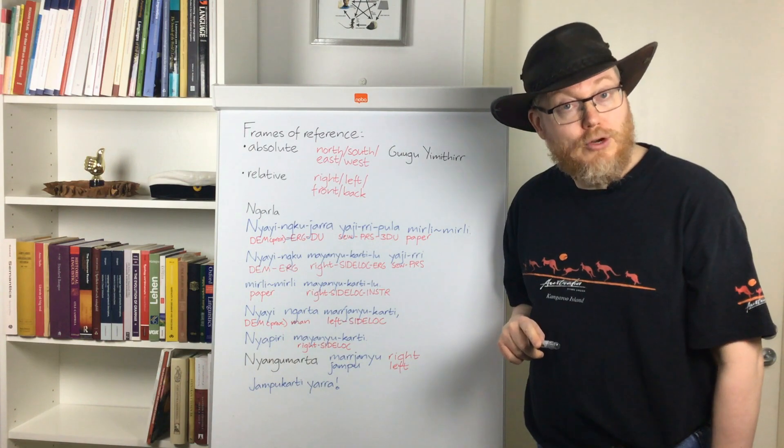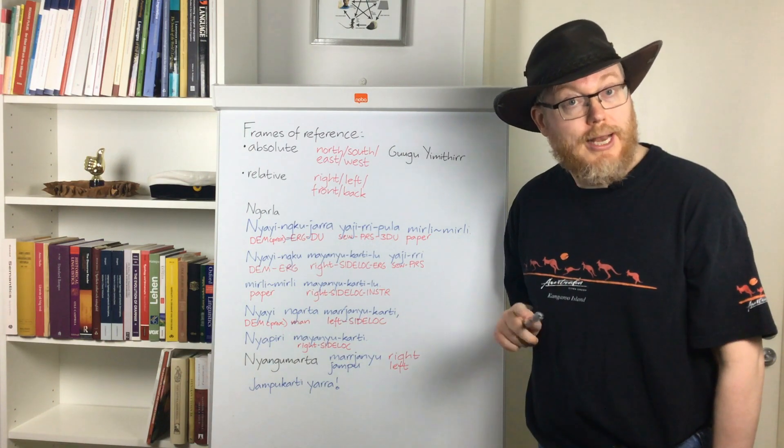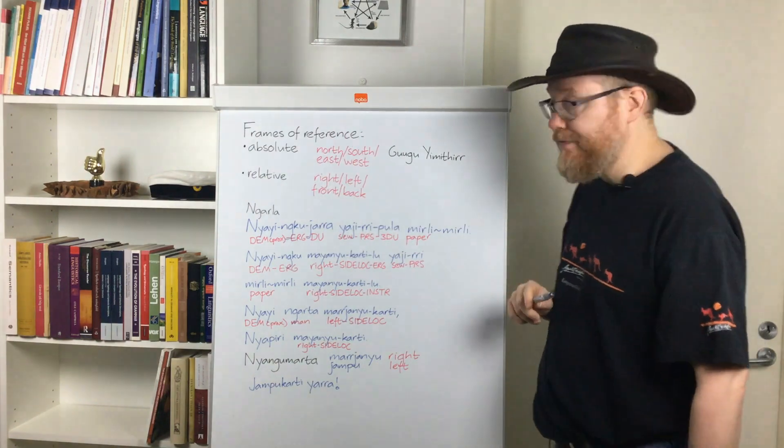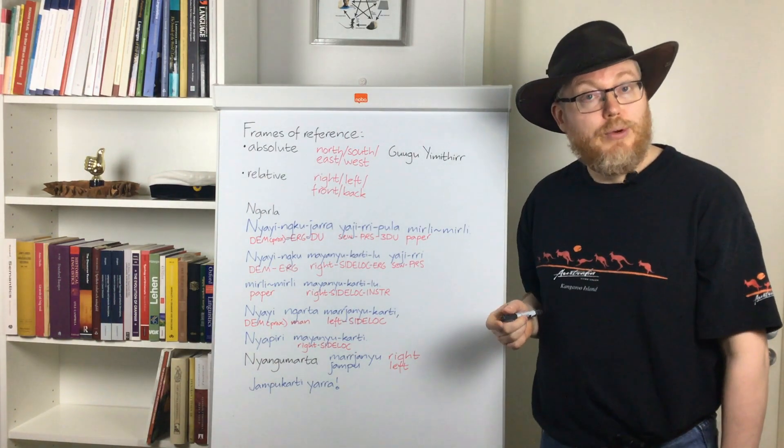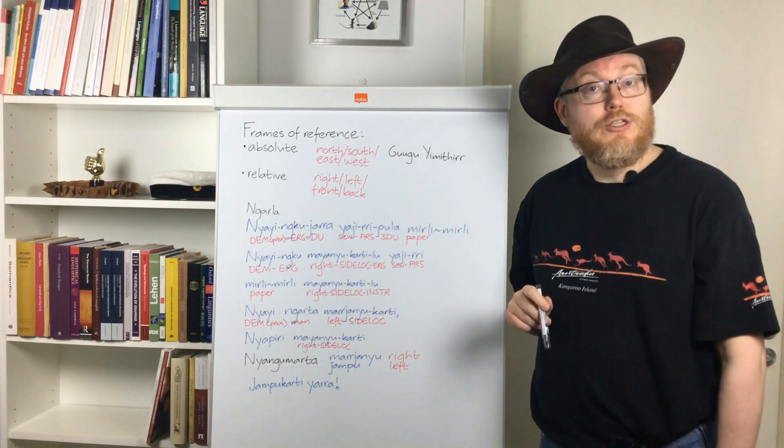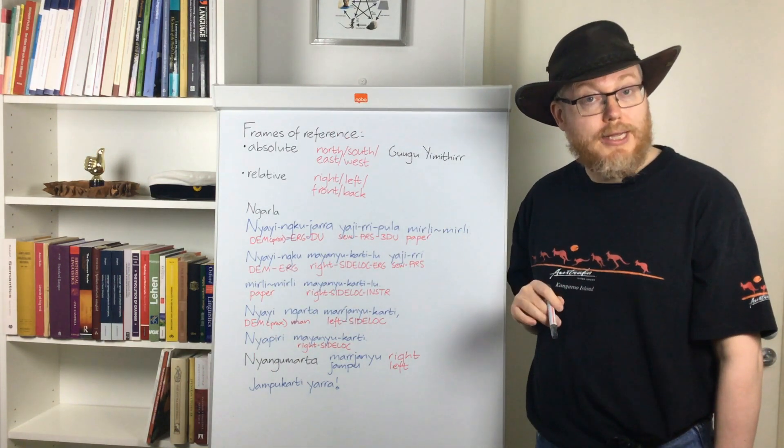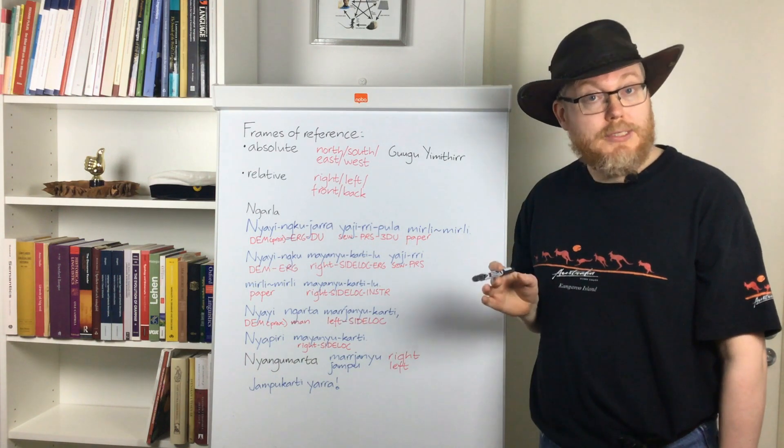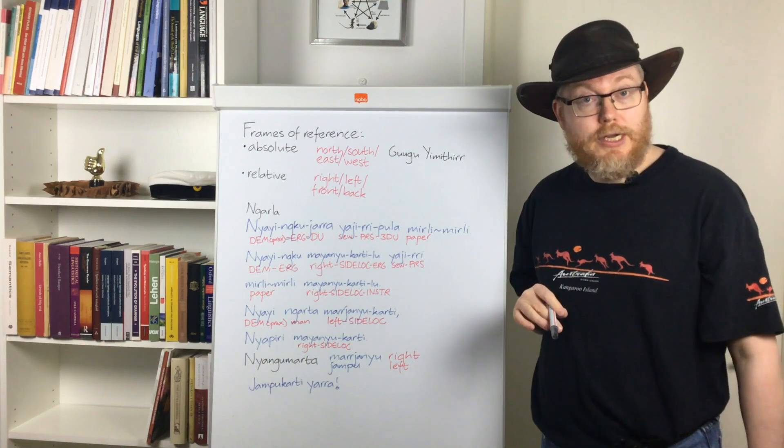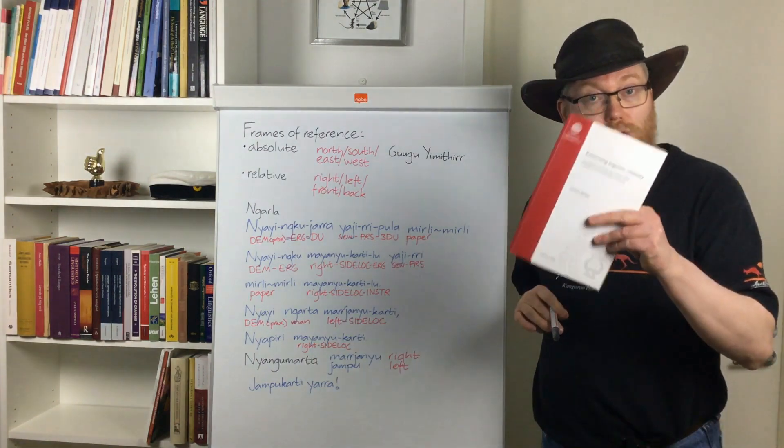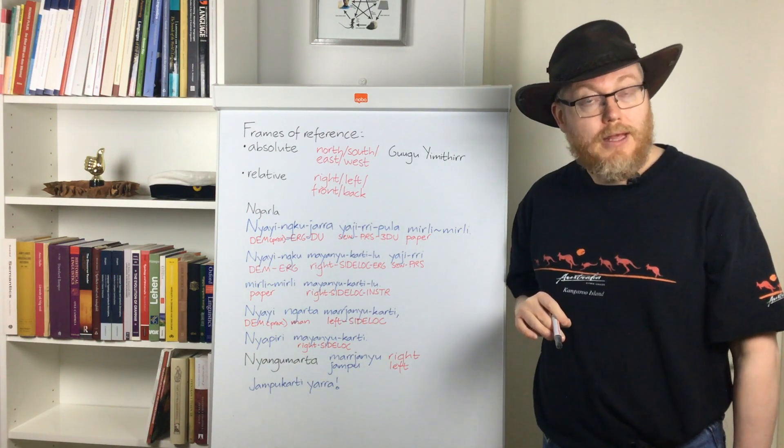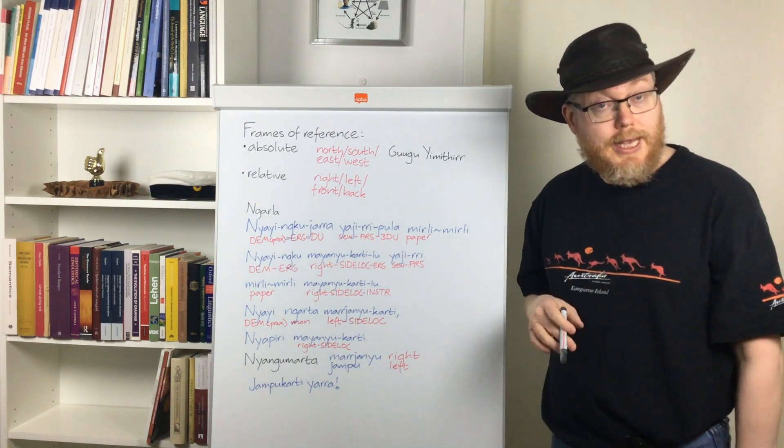Well, closely related and neighboring languages can make use of different frames of reference when referring to objects and where they are. So, this shouldn't be surprising, really. Sometimes this even happens within one and the same language, as Levinson mentions, and also my PhD student colleague from Uppsala University.